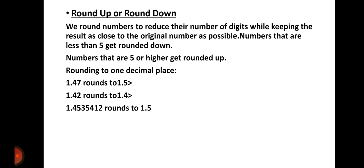Then we have 1.42. Since 2 is less than 5, we round it down to 1.4 — we remove the 2 completely and leave it as 4. Then we have 1.4535412. We round it up to 1.5. Why? Because the 3 that is next there is not up to 5, so the 4 now — since the next number is 5, we round 4 up to 5.